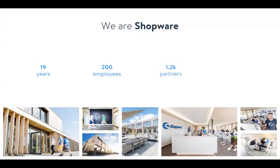We have around about 1,500 partners that differentiate between agency partners and technology partners. Agency partners are there to help you integrate our software within your IT infrastructure and can also help you with your brand strategy. Then we have tech partners — technologies you need in your ecosystem to maybe ship products, take care of payment, so they are mostly payment service providers, shipment providers, email marketing providers. I will go into more detail on that in a slide later on.